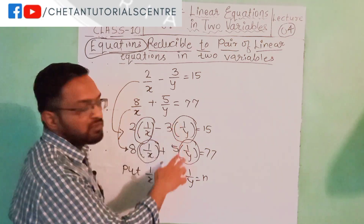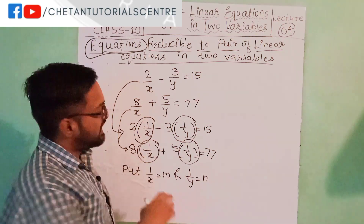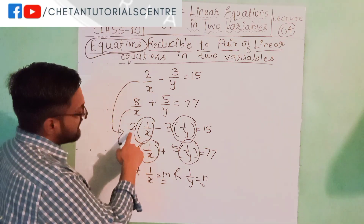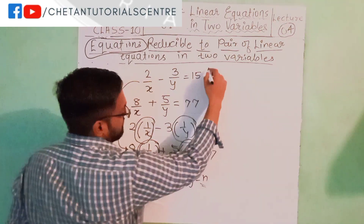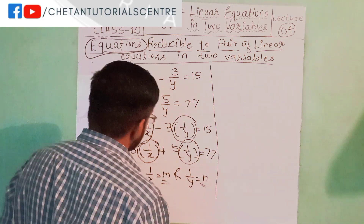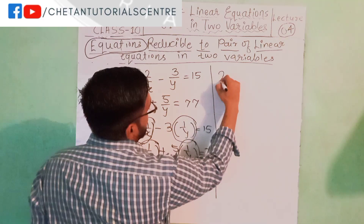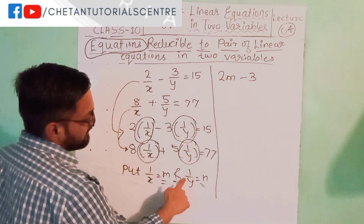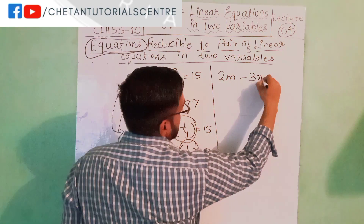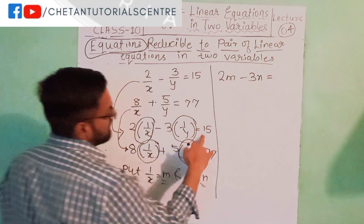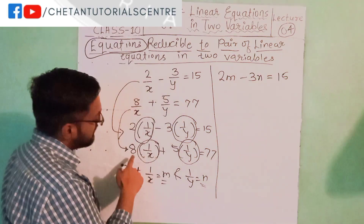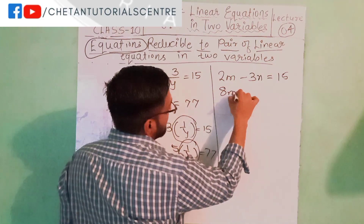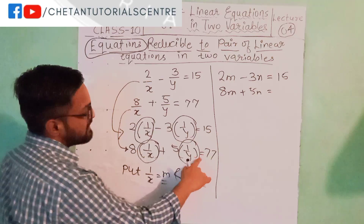These two variables were making our equations non-linear. So we replaced them with new variables m and n. Now 1 upon x becomes m and 1 upon y becomes n. So the first equation becomes 2m minus 3n is equal to 15, and the second equation becomes 8m plus 5n is equal to 77. You understand why we replaced those two variables — because they were making our equations non-linear.